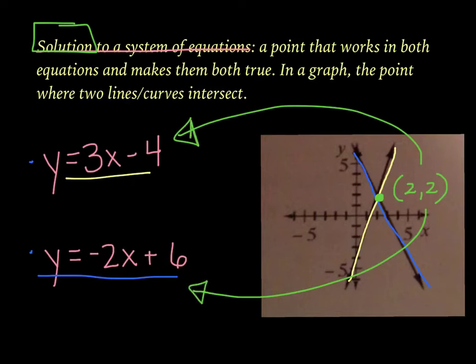Now, you can see that the point is 2, 2. Now, a solution to a system of equations is a point that works in both of those equations. So basically, this point is going to work for both of these equations, not just one of them. It has to work for both. So let's see if it does work.